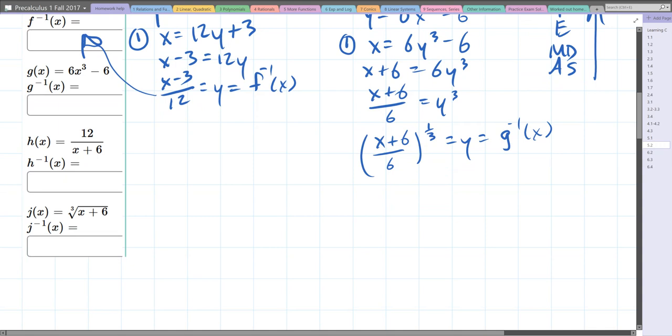For the h function, h(x) = y, so we substitute: y = 12/(x + 6). We want to get x by itself. First, I don't like fractions, so I'm going to multiply both sides by the entire denominator.